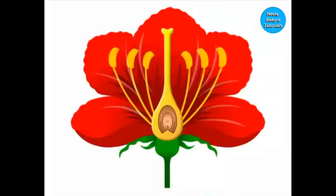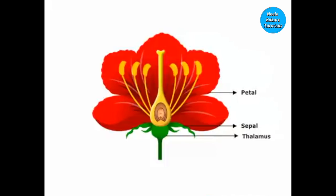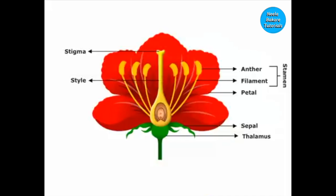To understand the process of fertilization in flowering plants, let us first see all the floral parts. The thalamus or receptacle provides the attachment place for the different floral parts. Sepals make the outermost wall and protect the flower during the bud stage. Petals are generally brightly colored to attract insects for pollination. The anther and filament make the male reproductive part of the flower, known as the stamen. The stigma, style, and ovary make the female reproductive part, called the pistil.